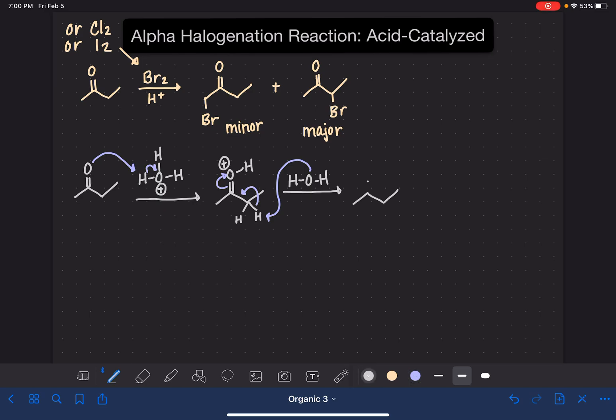And this is going to give us an alkene, an enol. Then our halogen will come in to the reaction. I'm going to use Br2 for this.